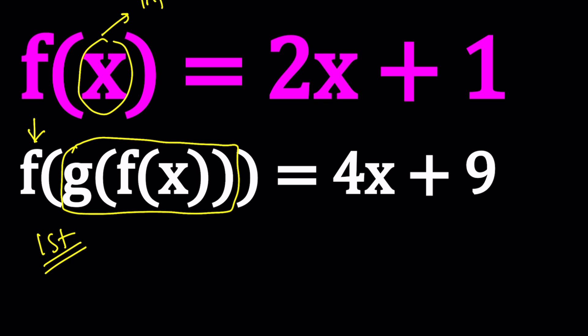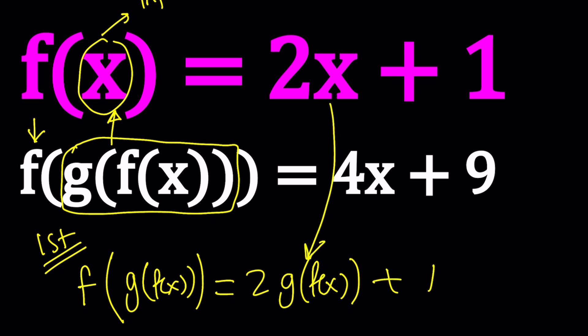But let's do the first one first. So for our first method, we're going to go ahead and replace x in f(x) with this. So in other words, f(g(f(x))), which you treat as a single entity, is 2 times g(f(x)) plus 1 by this definition. Look at that. We replace x with that and x with that.